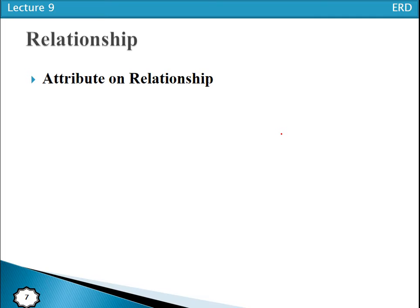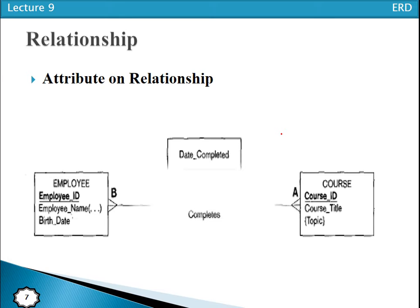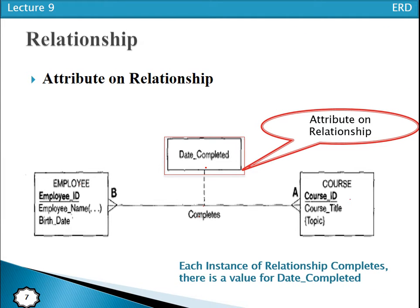Now we have the concept of attributes on a relationship. Attributes can be associated with a relationship. For example, with entity types Employee and Course, and the relationship named 'Completes,' the attribute 'date completed' cannot be associated solely with the Employee entity type or the Course entity type, so this attribute is associated with the relationship itself.